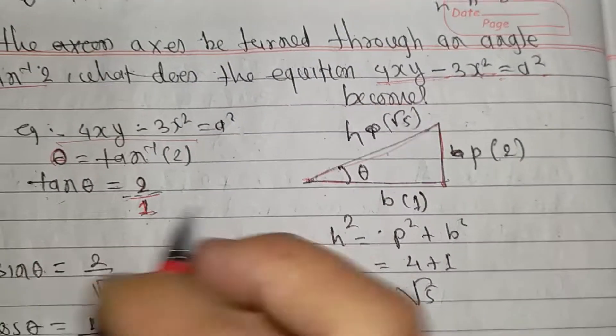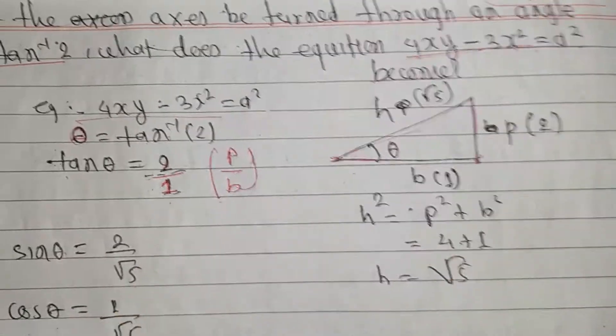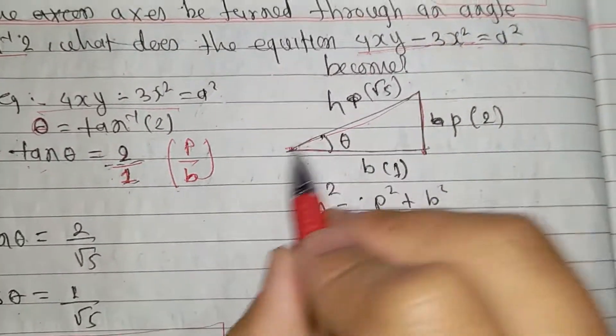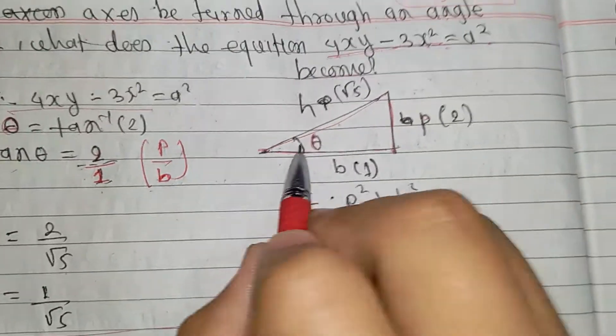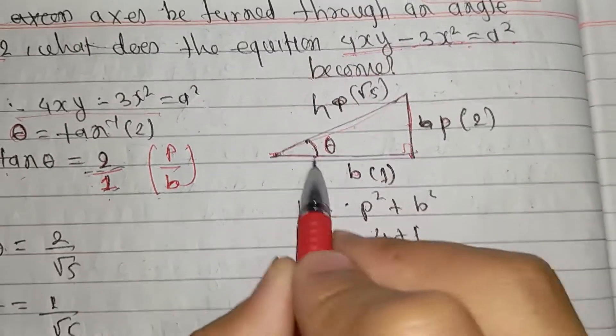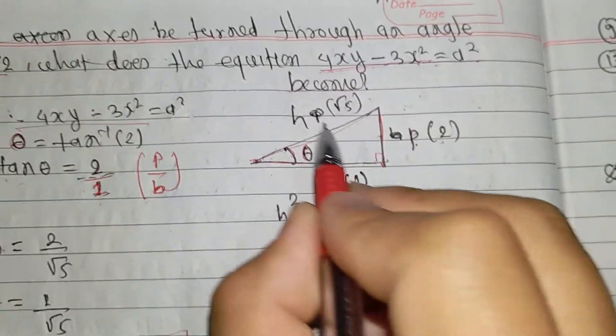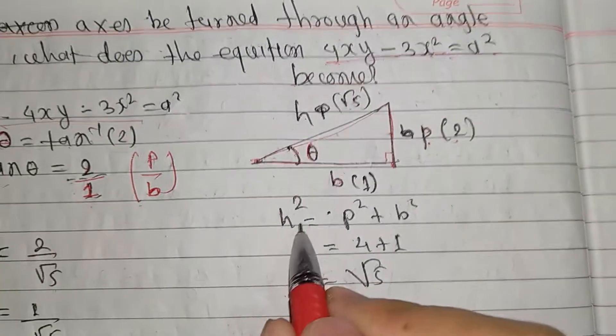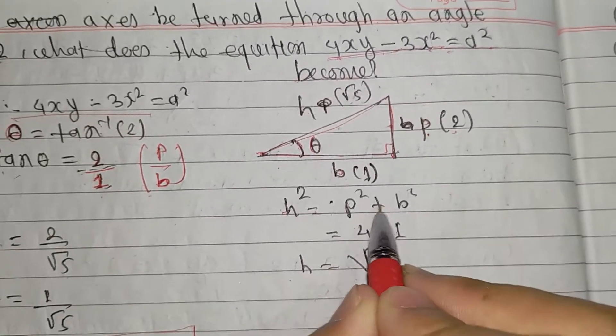We have perpendicular and base in the triangle. P is perpendicular, the perpendicular line is 1 and P is 2. By the rule h square equals b square plus p square.